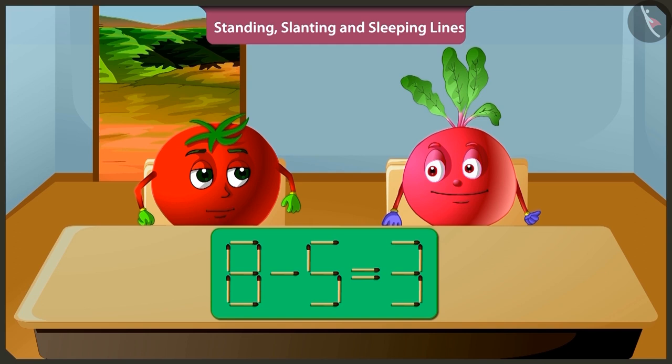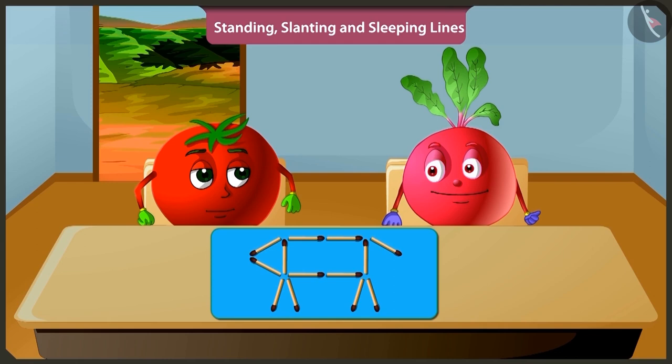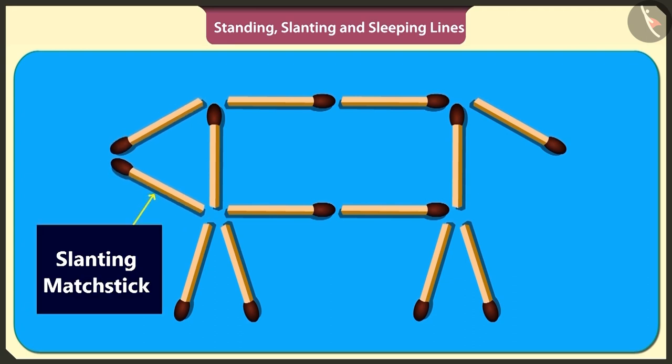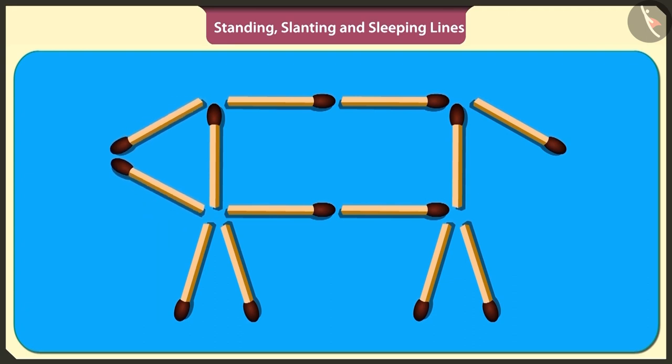I have made the dog using matchsticks. We made the dog's tummy using four sleeping sticks and two standing sticks. The dog's face is made using two slanting sticks. To make the dog's tail, one slanting stick has been used. Yes. And four standing sticks have made the four legs of the dog.